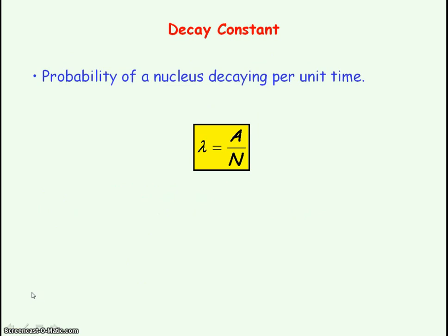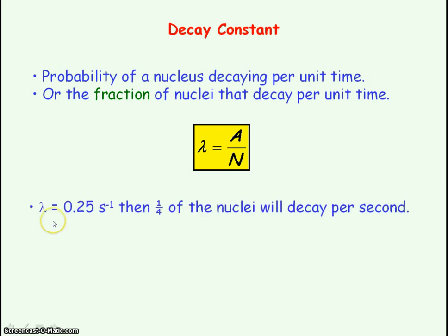The decay constant represents the fraction of the radioactive nuclei that will decay per unit time. If, for example, the decay constant equaled 0.25 per second, then that means a quarter of the nuclei will decay per second.